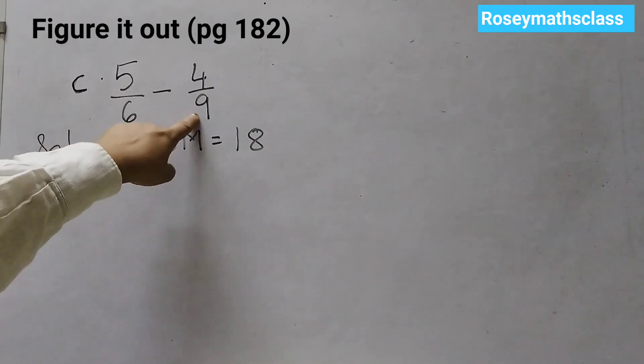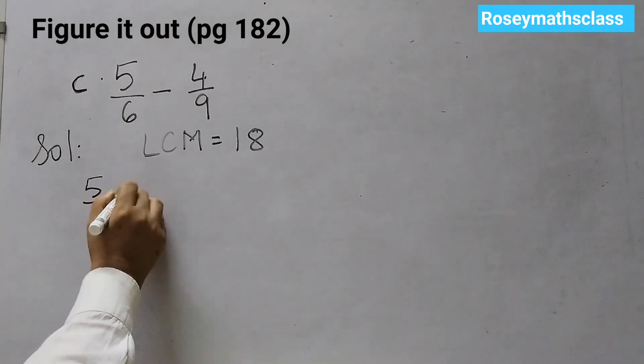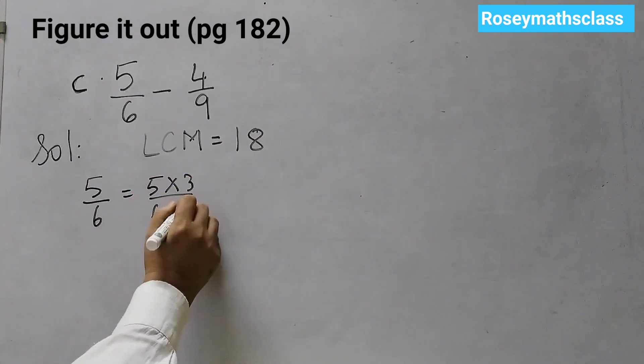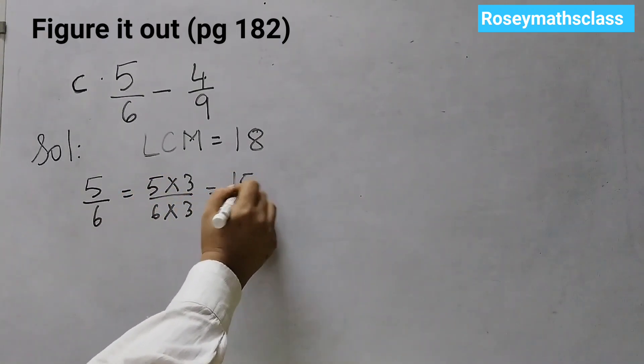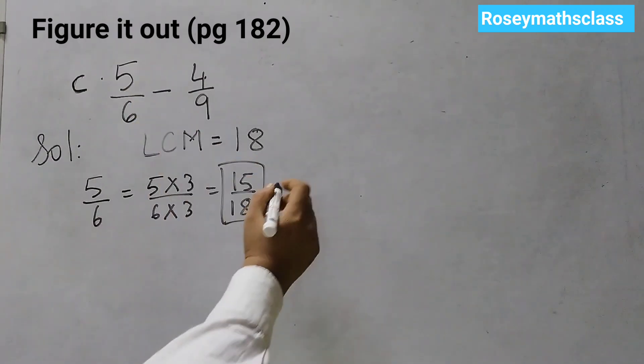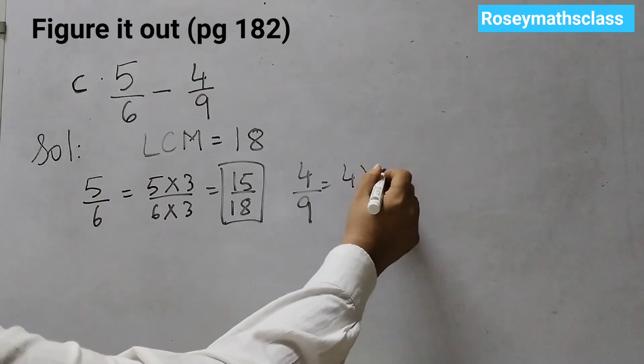So lowest common multiple is 18. Now we will convert 6 and 9 to 18. 5 upon 6, multiply by 3. 15 over 18. One fraction we got. Now 4 upon 9. So we will multiply by 2.